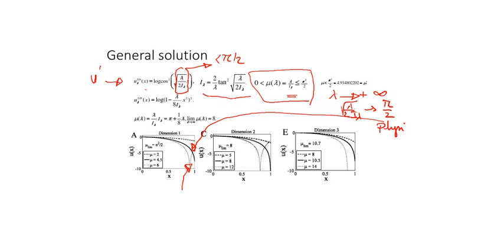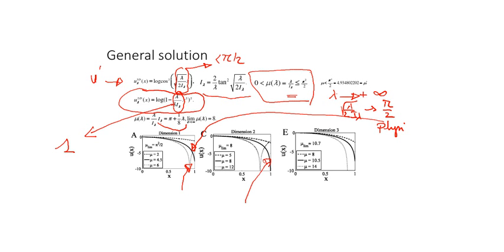In dimension 2, the equation can also be solved and we get the same type of log singularity. Instead of the previous expression we have lambda divided by 8*i_lambda, where i_lambda is defined by pi plus lambda divided by 8. Again, when lambda goes to infinity, lambda / 8*i_lambda converges to 1, expressing the singularity observed. The situation is the same in dimension 3, although it is not possible to solve the equation directly — this will be discussed in the next slide.